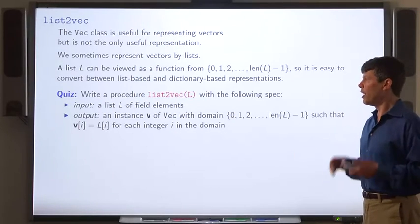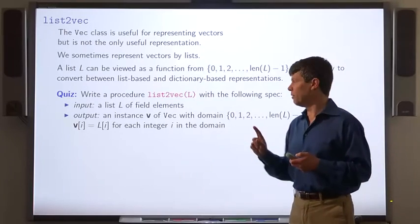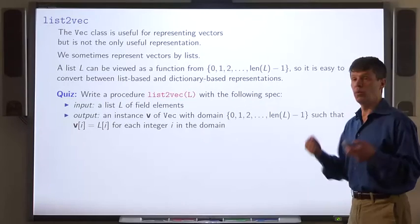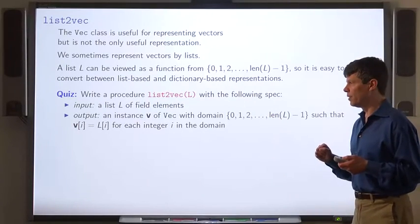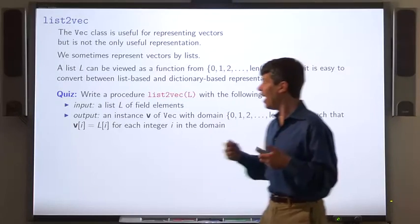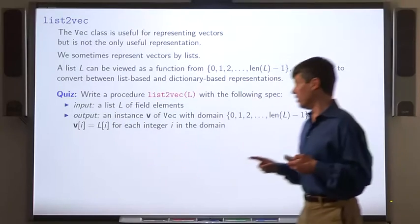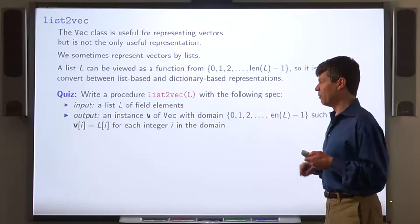Write the procedure list to VEX that takes a list of field elements and outputs an instance of VEX with domain 0 through the length of the list minus 1. Such that entry i of the vector v equals element i of the list L for each integer i in this domain.